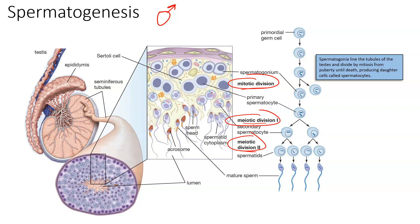Mitosis takes these primordial germ cells — which are not yet differentiated or specialized into viable gametes — and divides them to produce identical daughter cells called spermatogonia. This particular cell with two chromosomes is exactly the same as the resulting two cells. The primordial germ cell divides via mitosis to produce spermatogonia, which can then start the first meiotic division and ultimately lead to mature sperm cells. Each spermatogonia would also produce four gametes.